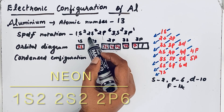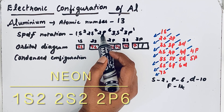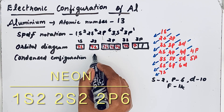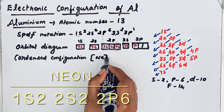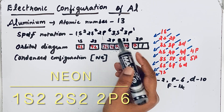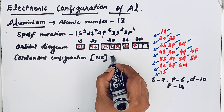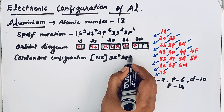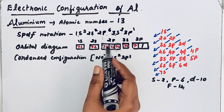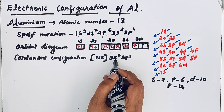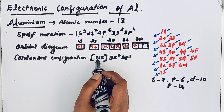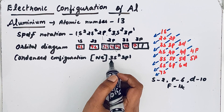We can simplify by representing the total number of electrons in the first and second shells by the name of the element neon, written inside brackets: [Ne]. Then we write the remaining electrons in the third shell: 3s² 3p¹. The electrons inside the bracket — 1s² 2s² 2p⁶ — are called core electrons, and the 3 outer electrons are called valence electrons. So aluminium has 10 core electrons and 3 valence electrons.